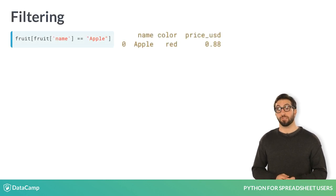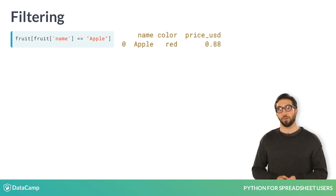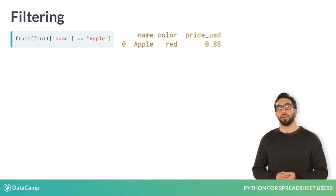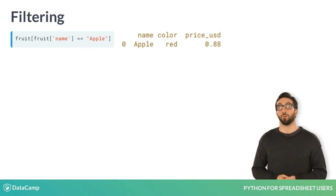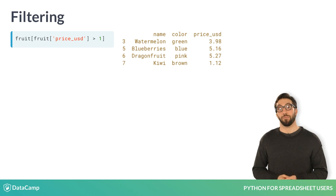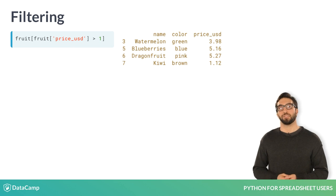To filter, we first reference our data frame, fruit, then inside a set of brackets, we place our comparison. The result is a data frame that only contains rows where the comparison is true — in this case, where name is equal to apple. Or here, where we change our comparison to be where the price column is greater than $1, resulting in a data frame where all entries have a price greater than $1.